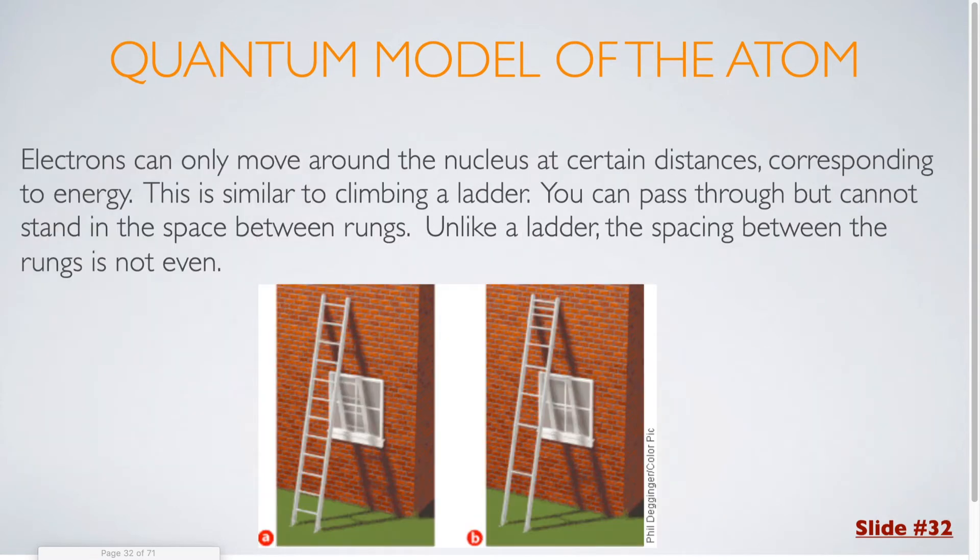Electrons can only move around the nucleus at certain distances, corresponding to energy. This is similar to climbing a ladder. You can pass through but cannot stand in the space between the rungs. Unlike a ladder, the spacing between the rungs is not even. You can see from our diagram here, we have a traditional ladder, and here you have a ladder where the rungs are not evenly spaced out, so they get closer together as you get further towards the top. That is more similar to how the atom is set up.